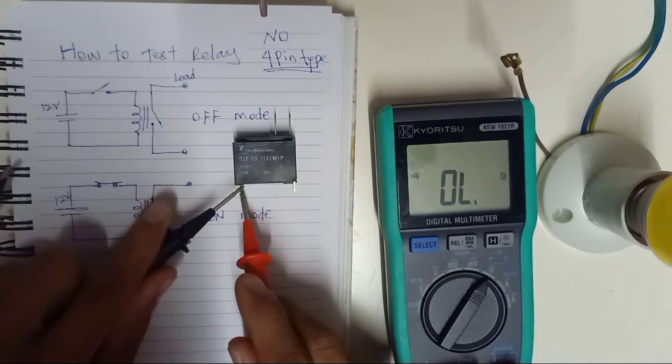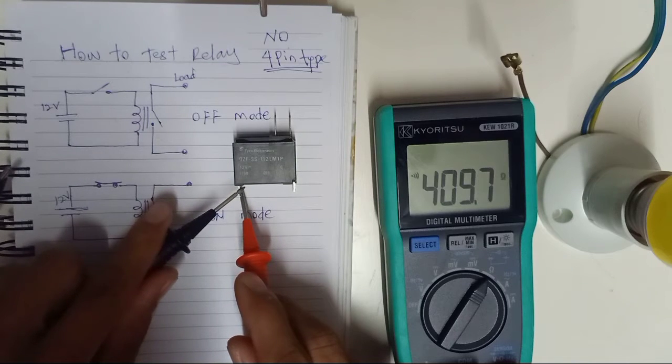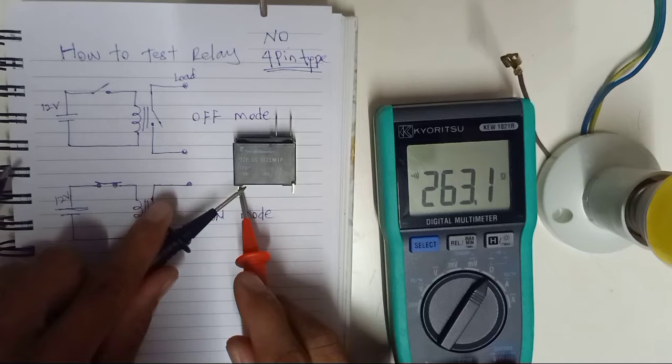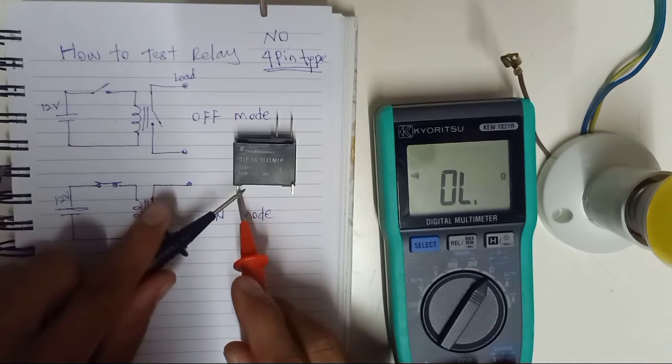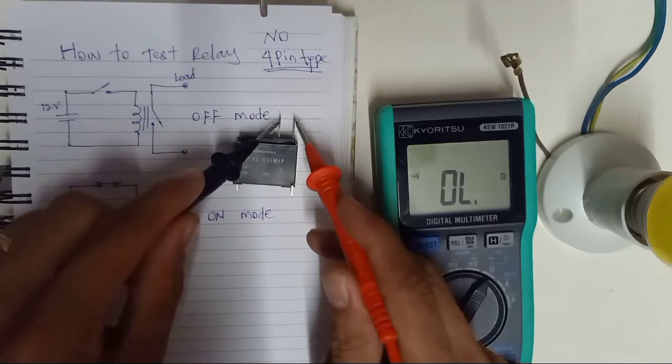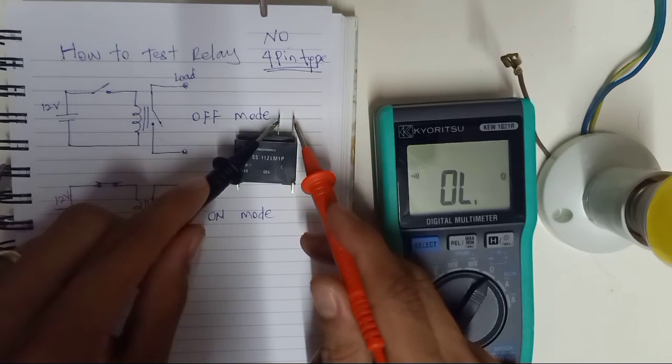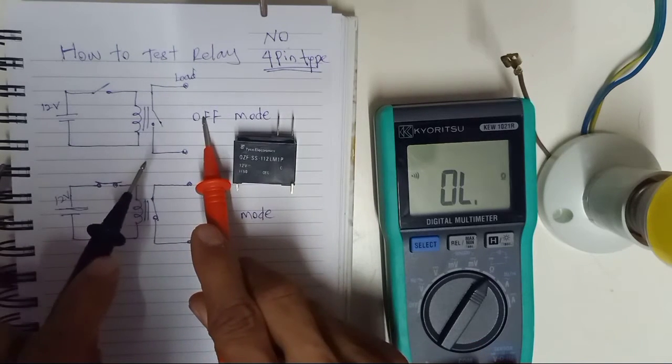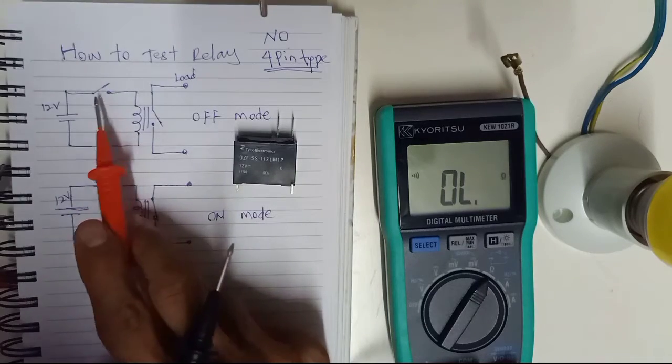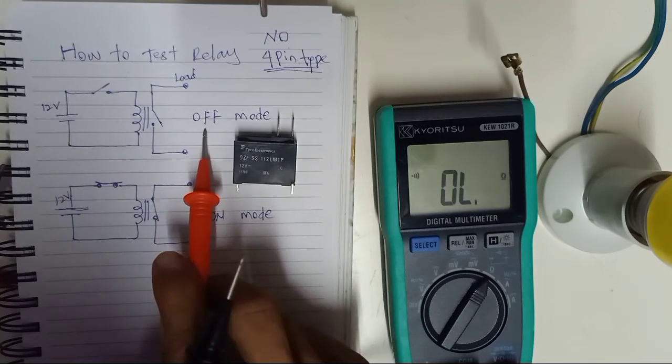But for the first pin, this is the coil, so there is no conducting, you need to supply power. And this is for the load, there is no conducting yet. Because it's off mode, the supply is not on, so the relay is off.